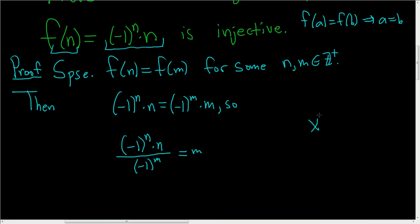Properties of exponents say that x^m / x^n = x^(m-n), right? You subtract. So we're going to do the same thing here. This equals (-1)^(n-m) · n.